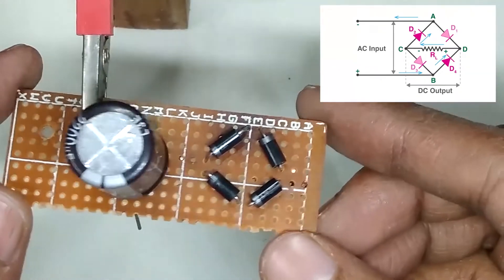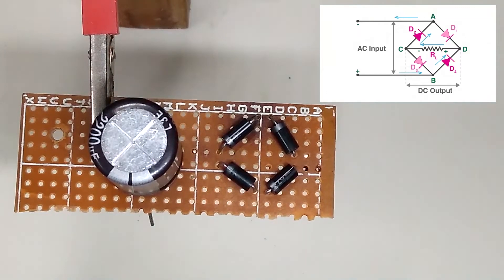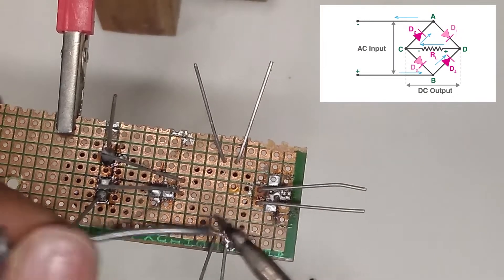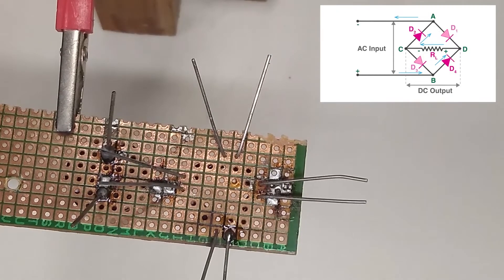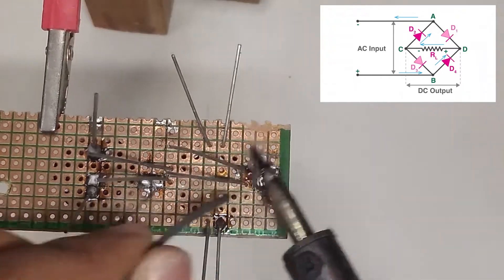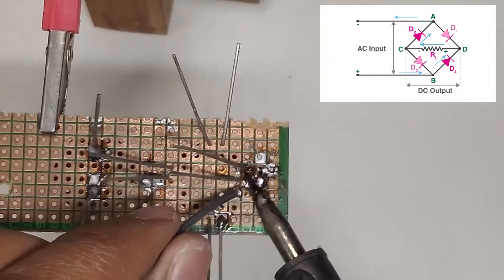After the rectification we have pulsating DC. With a good capacitor of 80 volt and 1000 microfarad it can make filtered output voltage. After all of this, the rectifier will produce 24 volt pure DC.